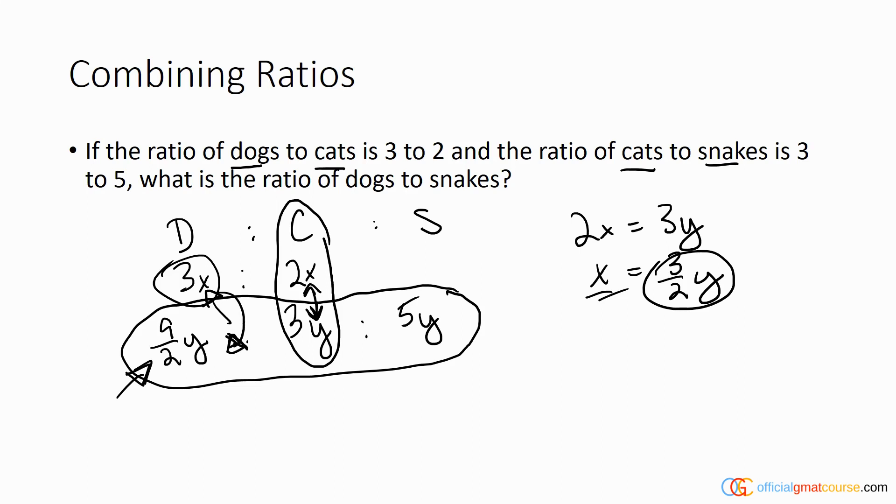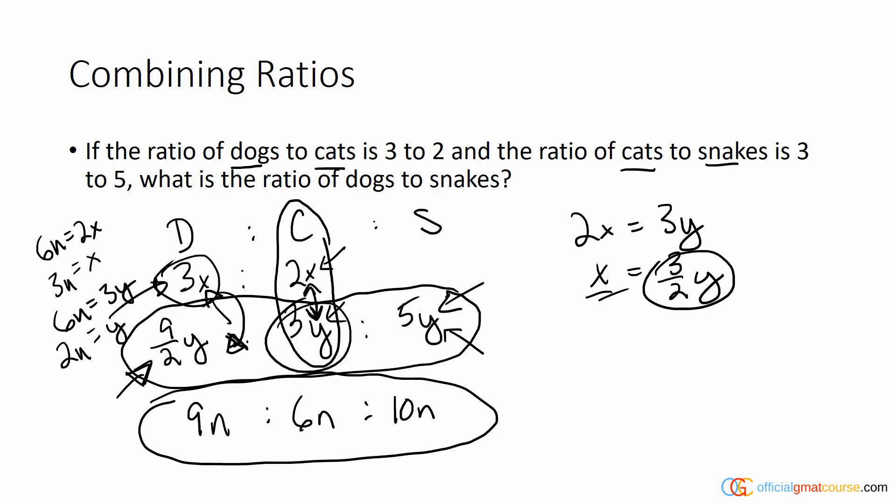Another way is to look at cats and say, okay, I know cats is a multiple of six because it's a multiple of two and a multiple of three. So I'm going to think of cats as being 6n. Well if 6n equals 2x then x is equal to 3n, and I can think of dogs as being 3 times 3n which is 9n. And I can think of snakes which is 5y. Since I know that 6n is also equal to 3y, where the number of cats was represented with the multiplier of y, I know that y is equal to 2n, which means I can plug 2n here and get 10n out for the number of snakes.